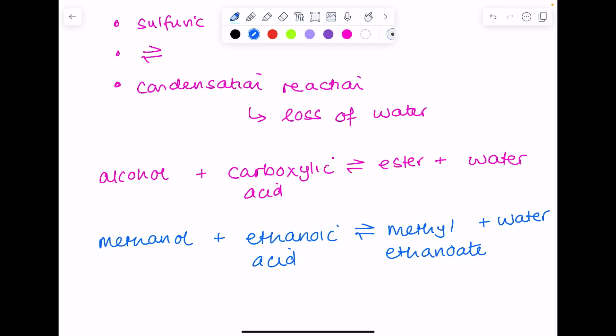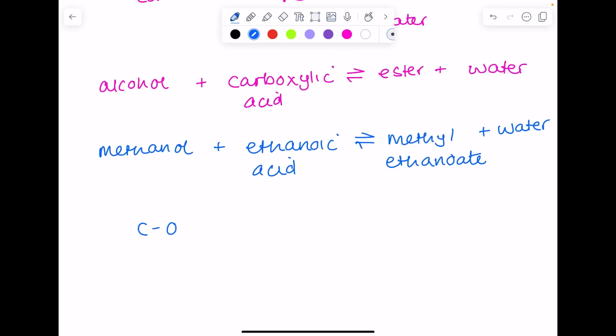I'll quickly draw the displayed formula for this. There's methanol, here's ethanoic acid. You're gonna lose a water molecule. The H comes from the alcohol, the OH comes from the carboxylic acid. So to draw your ester you'll need to draw something like this. Be very careful with how you draw it.